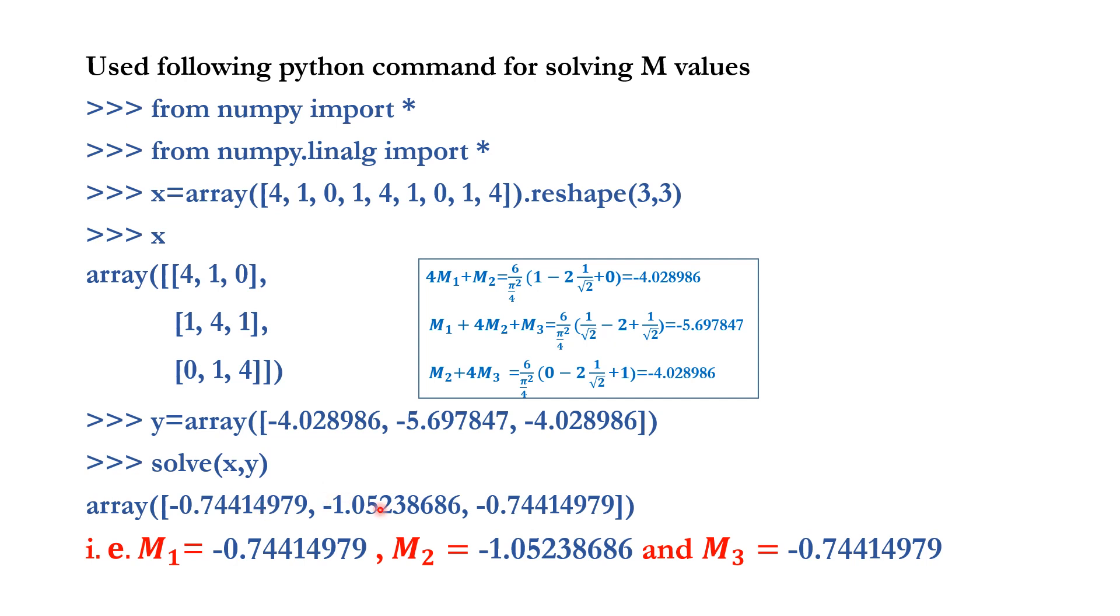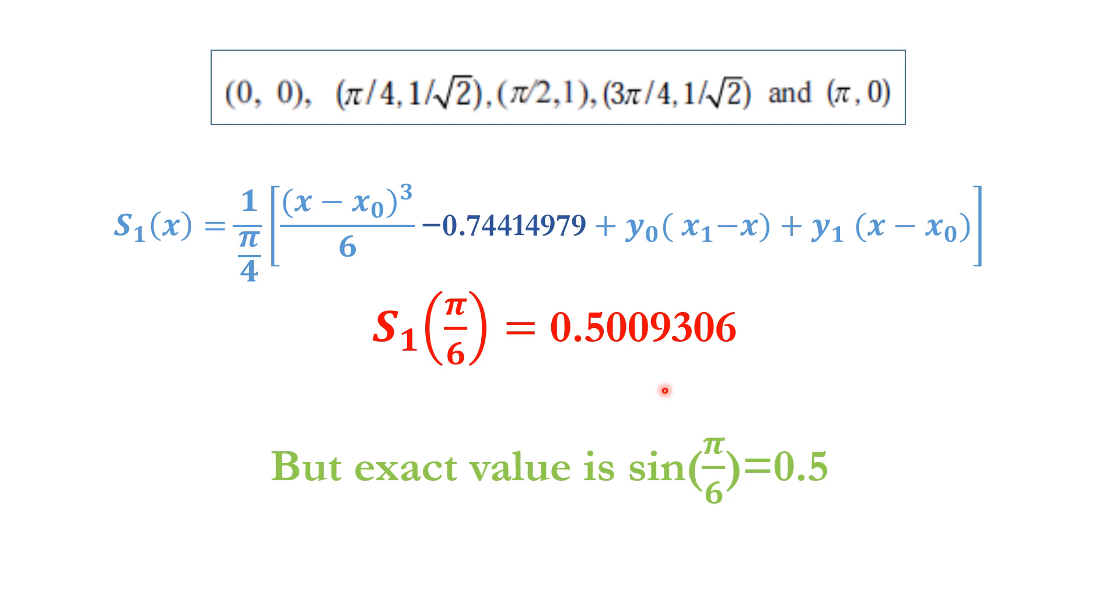This is the result produced in Python shell. M₁ = -0.74414979, M₂ = -1.05233686, and M₃ = -0.74414979. In our problem we need only the M₁ value. There are two M values in our S₁, M₀ and M₁. M₀ is already known, it is zero. We found the M₁ value.